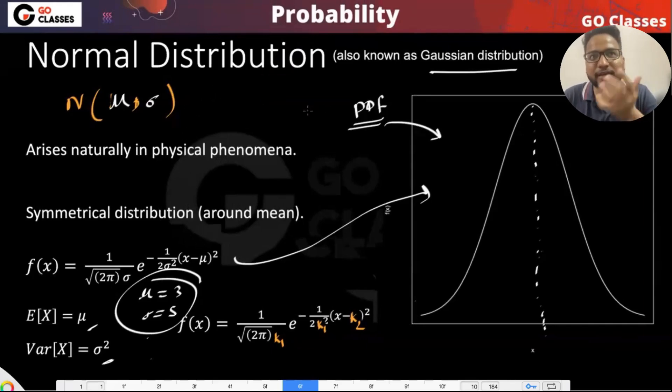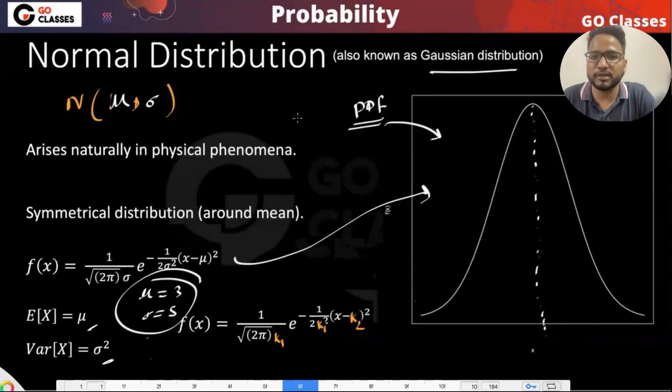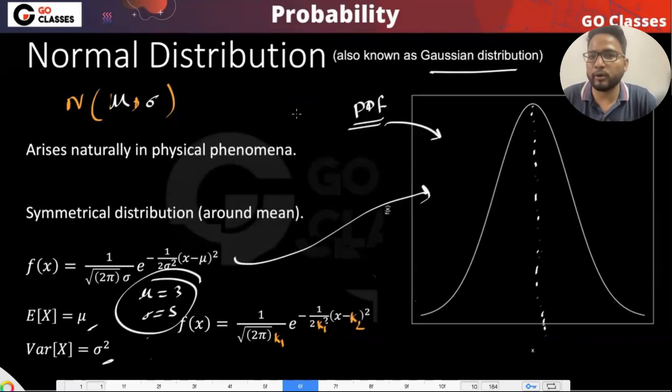Any data in machine learning — we assume that it is following normal distribution. The reason being is that it is quite often observed.